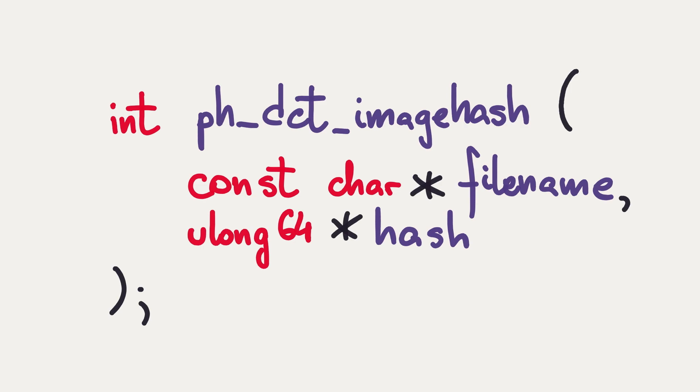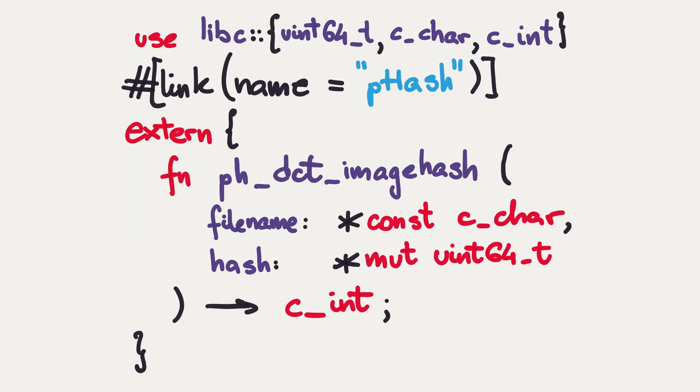Let's warm up and try to wrap this API with a bit of Rust. We declare an extern function, ph_dct_imagehash, and we declare its API using data types we imported from the libc crate. We need to also instruct the linker that in order to link something against this external definition, it needs to reach to the PHASH library.